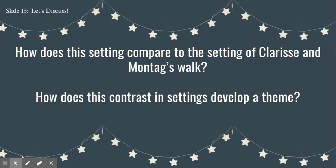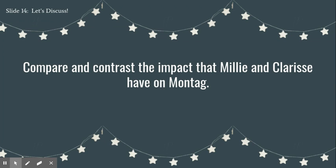Now open up your Anchor Text Theme Tracker and add a row called 'setting' and complete the row. You're going to be adding setting to another row. Now let's look at the prompt on the screen. I want you to compare and contrast the impact that Millie and Clarice have on Montag. Let's discuss. Now taking the information we just discussed, add to your Evolution of Montag handout, if you haven't already done so, with this information.